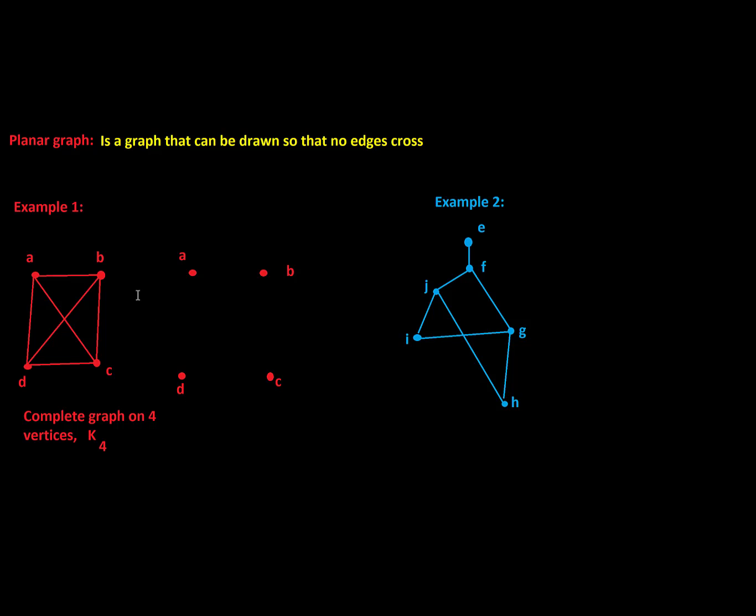All right, so A to B, that looks good. I'm going to redraw that edge right there. And B to C is fine so far—no edge crossing, so I'm happy about that. And similarly, C to D.